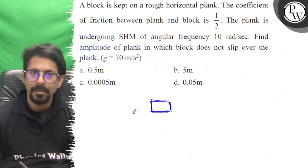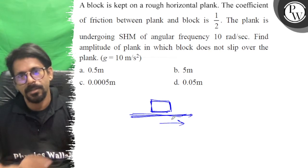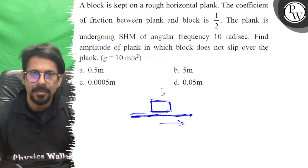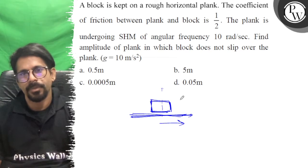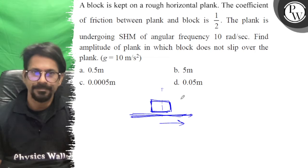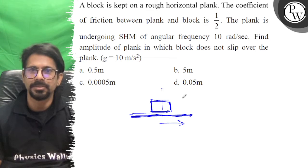So this is the plank which is oscillating like this, and we have to find maximum amplitude of the plank in which the block does not slip.